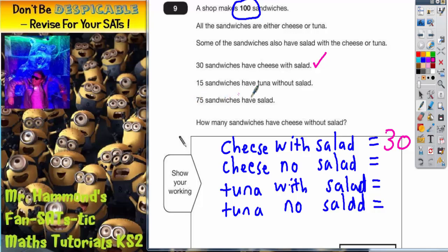15 sandwiches have tuna without salad. So tuna no salad is 15. That's that clue done.